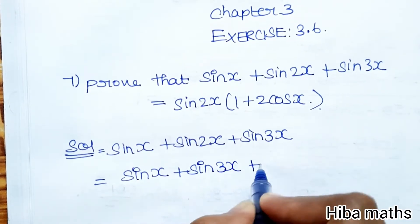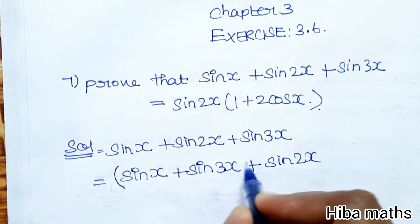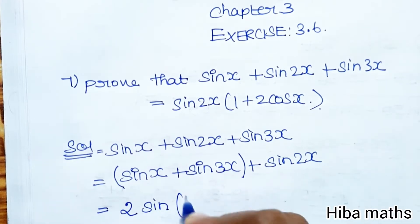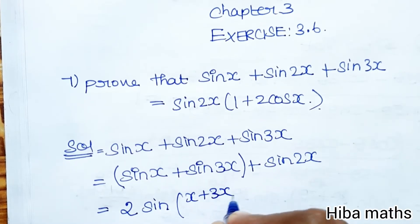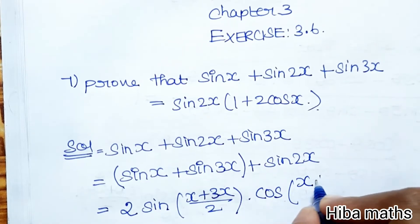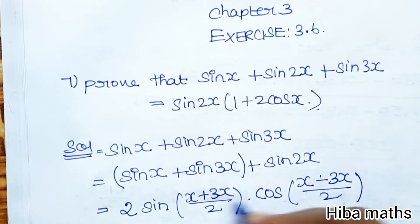Taking the first two terms together: sin x + sin 3x + sin 2x. Using the identity sin A + sin B = 2 sin((A+B)/2) cos((A-B)/2), we can expand the first two terms.